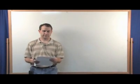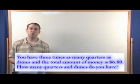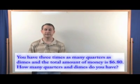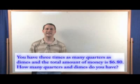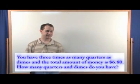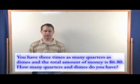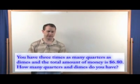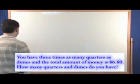First problem is you have three times as many quarters as dimes, and the total amount of money that you have is $6.80. How many quarters and dimes do you have? So you have some quarters and dimes, the total amount of money given is $6.80, and you have three times as many quarters as dimes, and you're trying to find out how many quarters and dimes that you have.